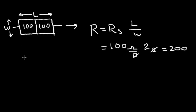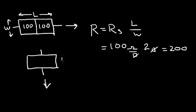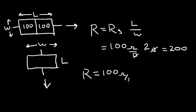Let's take the same resistor — the same shape — but put the terminals at the other end so that the current will flow in the perpendicular direction. Now this becomes the length and the width is this other dimension. The resistance is the sheet resistance — 100 ohms per square — times the length divided by the width, which is one half of a square. The squares cancel and I'm left with 50 ohms. So this is a 50 ohm resistor if the current flows in the short dimension.